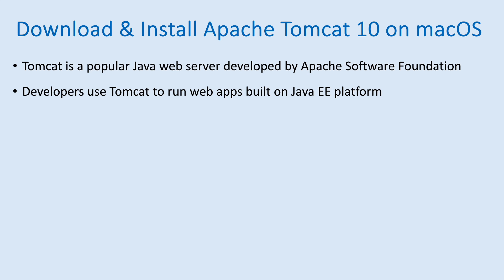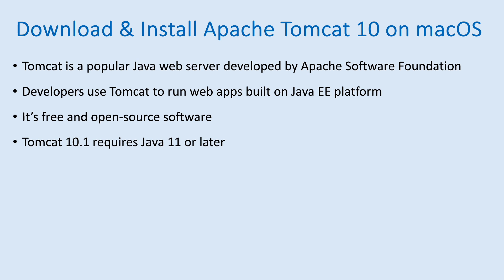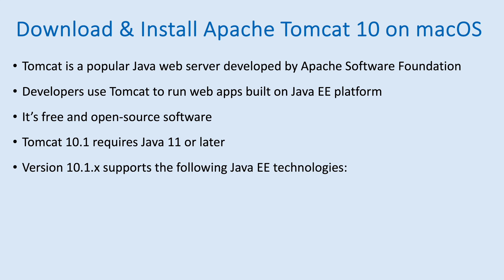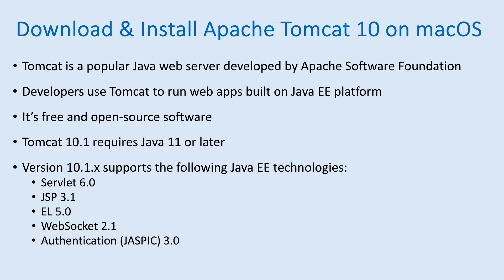Developers use Tomcat to run web applications built on the Java EE platform. It is free and open source software. Tomcat version 10.1 requires Java 11 or later, and version 10.1.x supports the following Java EE technologies: Servlet 6.0, JSP 3.1, EL 5.0, WebSocket 2.1, and Authentication JASPIC 3.0.